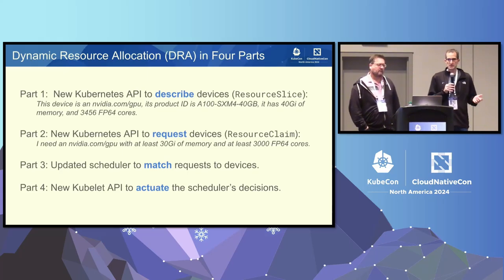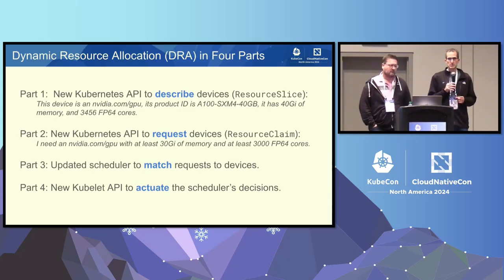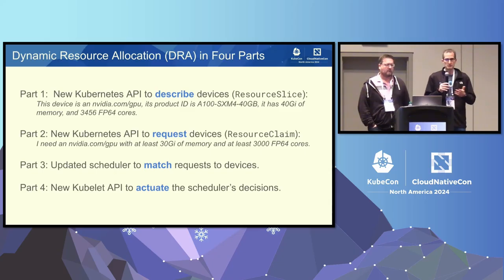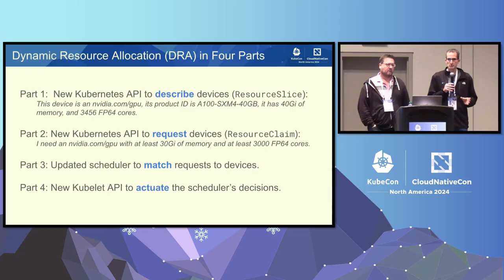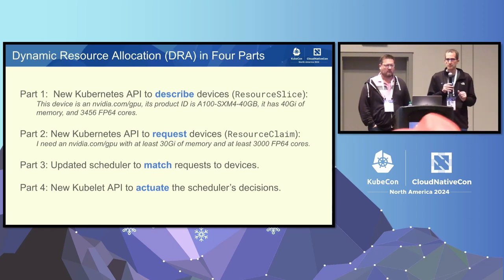The best way to describe it is to look at the main core pieces of this new API. The first part is how device drivers describe what they have — that's the so-called resource slice, a built-in type. In the current incarnation we have a very simplistic device model: just a name and some attributes defined by the vendor. In this NVIDIA example, it could be saying I'm a GPU with a certain product ID, a certain amount of RAM, and certain numbers of compute cores.